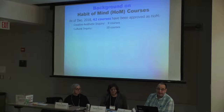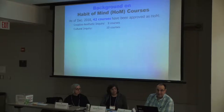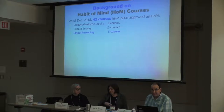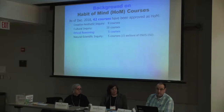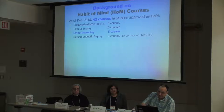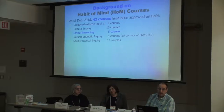As of December 2018, there were 42 courses approved as Habit of Mind courses. In Creative Aesthetic Inquiry, there were 9 courses; in Cultural Inquiry, 10 courses; in Ethical Reasoning, only 5 courses; in Natural Scientific Inquiry, also only 5, though one course — Environmental Science 150 — had 15 sections covering a lot of students. Socio-historical Inquiry had 13 courses accepted.